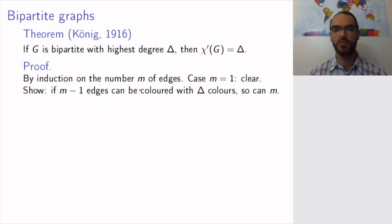So what we need to show, because we're doing this by induction, is that if a bipartite graph with m-1 edges can be colored with Δ colors, then you can do that with m edges.